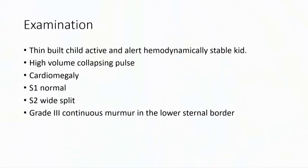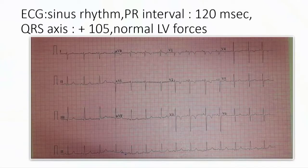On examination, the child was thin-built but active, alert, and hemodynamically stable. The pulse volume was high volume and collapsing. There was cardiomegaly; S1 was normal and S2 was widely split. You could hear a grade 3 continuous murmur at the lower sternal border. This is the ECG of the child, which showed sinus rhythm with a PR interval of 120 milliseconds.